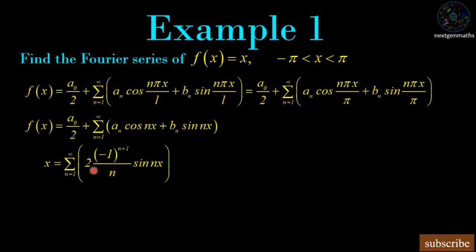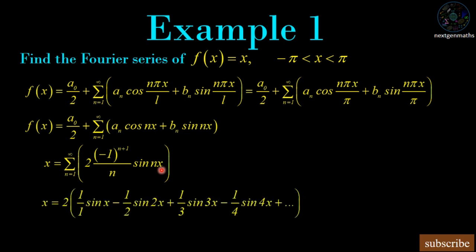Expanding the summation: for n=1, the term is 2·(−1)²/1·sin(x) = 2·(1/1)·sin(x). For n=2, the term is 2·(−1)³/2·sin(2x) = −(1/2)·sin(2x). For n=3, the term is (1/3)·sin(3x), then −(1/4)·sin(4x), and so on. So the Fourier series for f(x) = x on −π to π is x = 2[sin(x) − sin(2x)/2 + sin(3x)/3 − sin(4x)/4 + …].